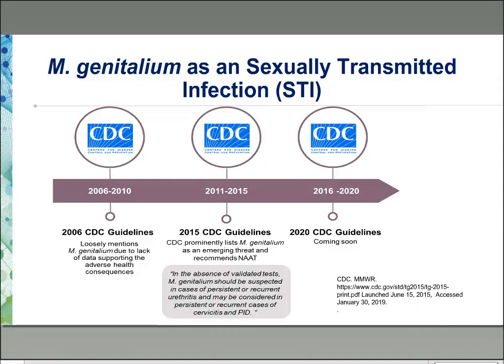Back in 2006, CDC treatment guidelines only loosely mentioned MGEN as a pathogen, with very little data supporting its adverse health consequences, partly due to the fact that we only had cultures for diagnosis. Since then, there have been better ways to detect the pathogen. In 2015, the CDC treatment guidelines provided an MGEN section under emerging infections, stating that in the absence of validated tests, MGEN should be suspected in cases of persistent or recurrent urethritis, and may be considered in persistent or recurrent cases of cervicitis and PID. We are in the process of reviewing the treatment guidelines based on the literature from the past four years.